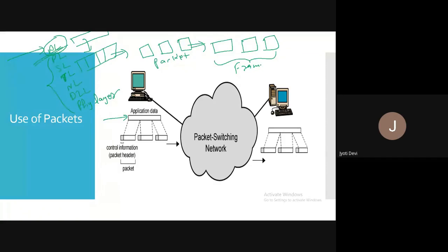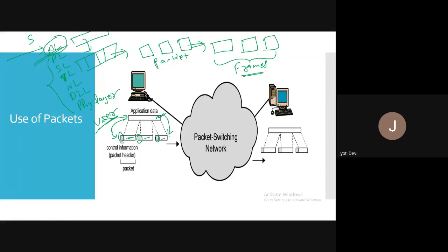This is all working internally at the sender side. Every layer adds their header plus data. At the sender side they are adding the header, but at the receiver side they are removing the header. The user gives the data to the application layer, and if the data size is large you break the data into different packets — since we are dealing with the network layer. In the packet there are two parts: one is your header and the other is your data.